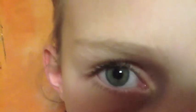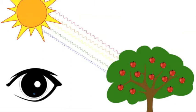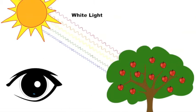We see colour through our eyes. Light from the sun has all colour waves in it. This is known as white light.